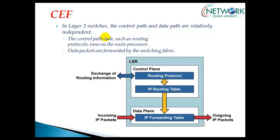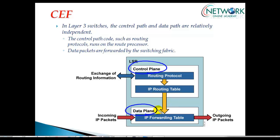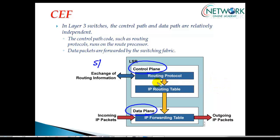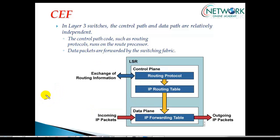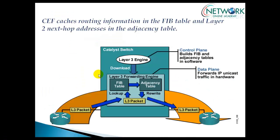CEF optimizes the router to forward packets much faster than normal. In Layer 3 switches and routers, there are two major planes: the control plane and the data plane. The control plane is more like software information which builds a routing table called the RIB — Routing Information Base table. Based on that routing table, CEF copies this routing information into the data plane. In the data plane, there are two tables: the FIB (Forwarding Information Base) and the adjacency table.